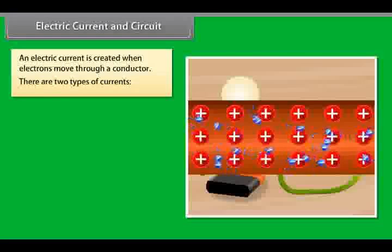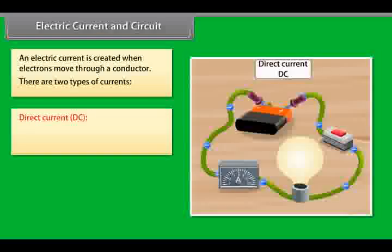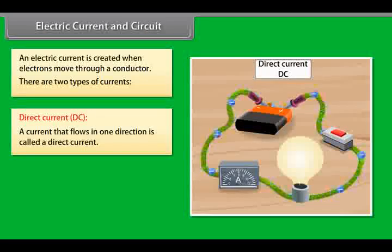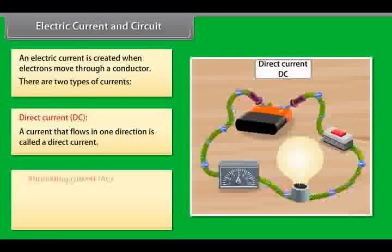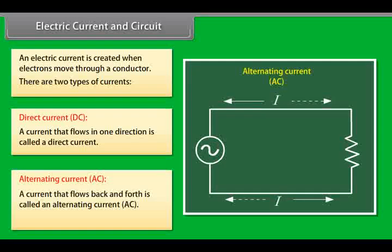There are two types of currents. Direct current, DC. A current that flows in one direction is called a direct current or DC. For example, a battery produces a direct current. Alternating current, or AC. A current that flows back and forth is called an alternating current or AC.